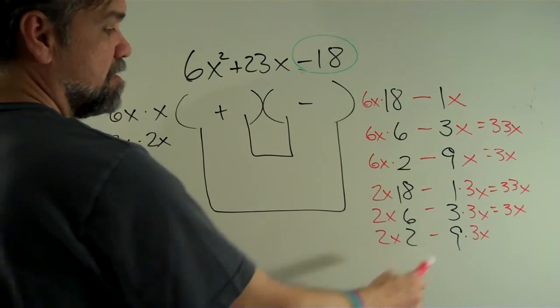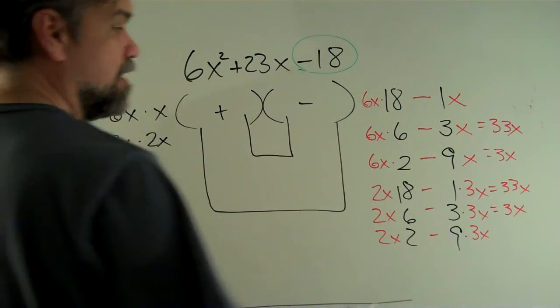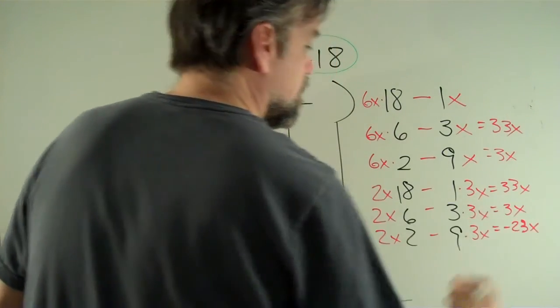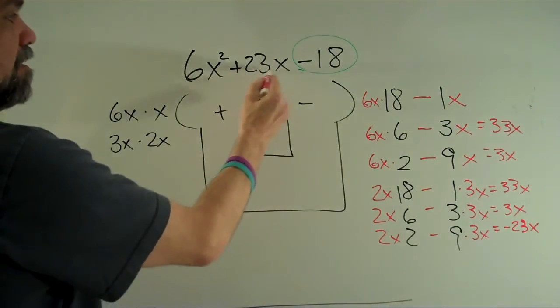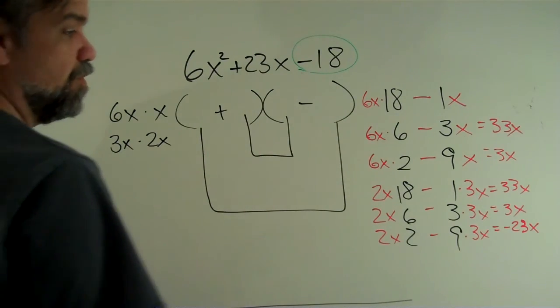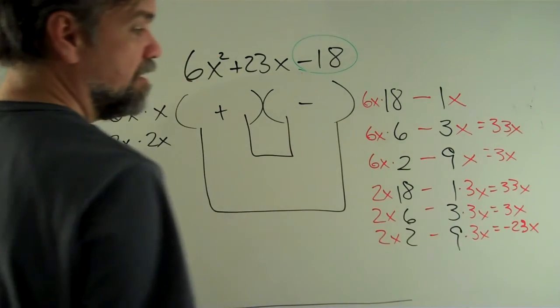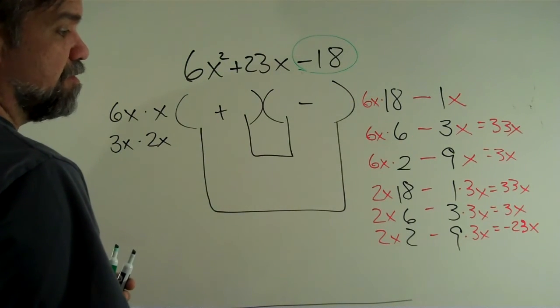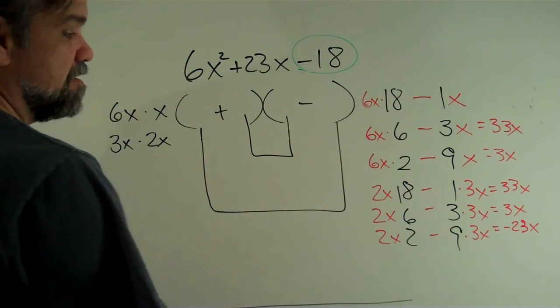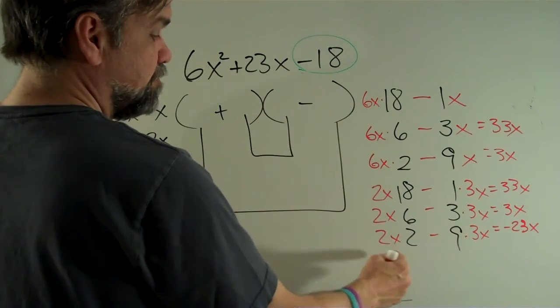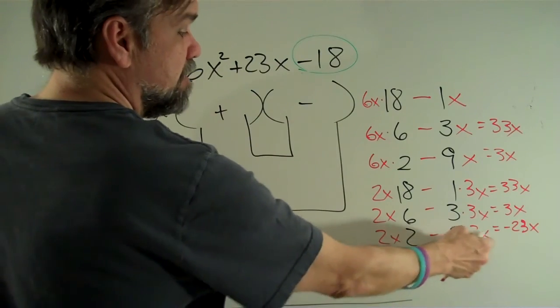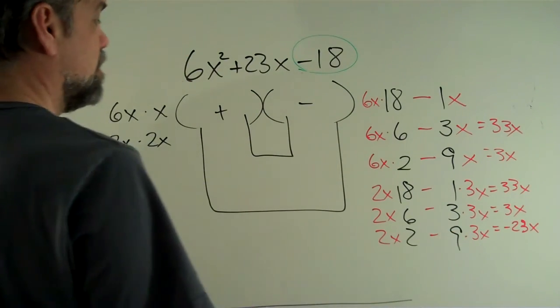2x times 2 is 4x minus 27x equals negative 23x. And although that's not what I was looking for, it's really close. Instead of getting a positive 23x, I got a negative 23x. So what that means is instead of doing 2x times 2 minus 9 times 3x, I just need to go the other way and do 9 times 3x minus 2 times 2x.